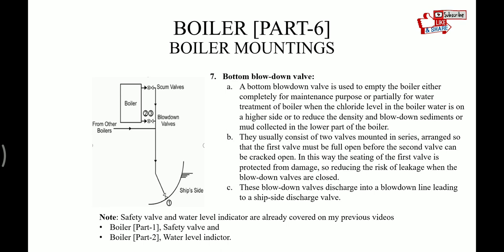Bottom blow down valve is used to empty the boiler either completely for maintenance purpose or partially for water treatment of the boiler. When chloride level in the boiler is on a higher side or to reduce the density and blow down sediments or mud collected in the lower part of the boiler. They usually consist of two valves mounted in series.